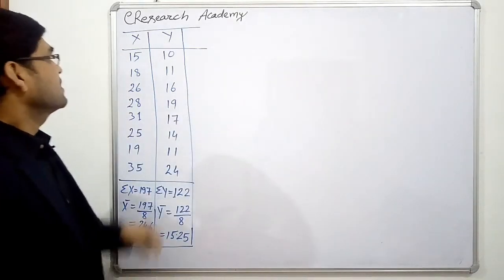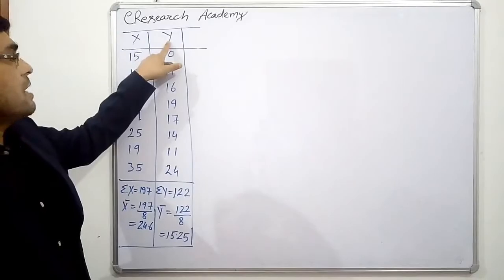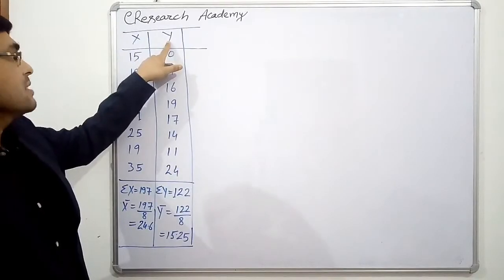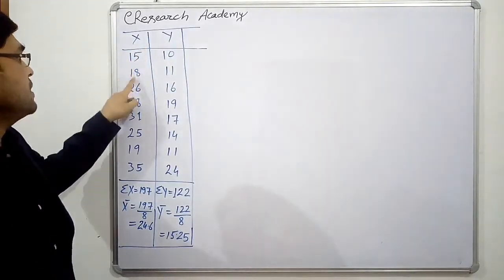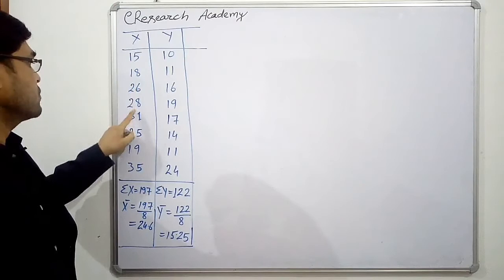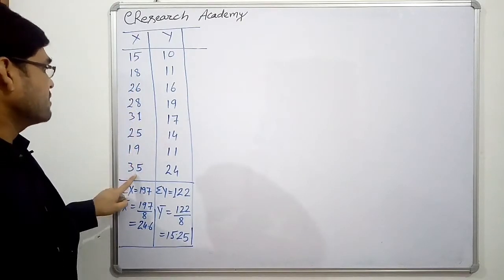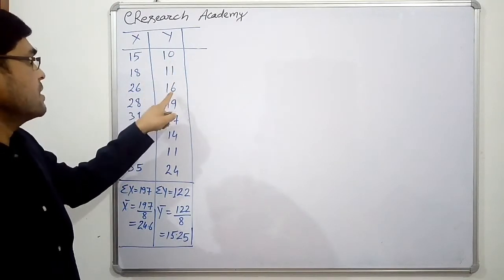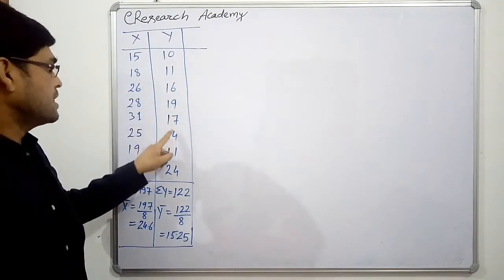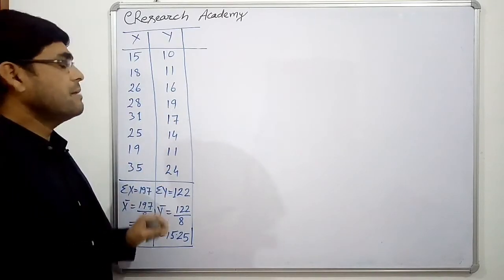We are given a question with two variables x and y. For x we have: 15, 18, 26, 28, 31, 25, 19, and 35. For y we have: 10, 11, 16, 19, 17, 14, 11, and 24. We have to estimate two regression equations by assumed mean method.